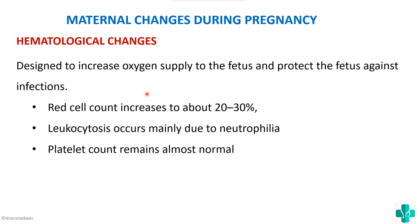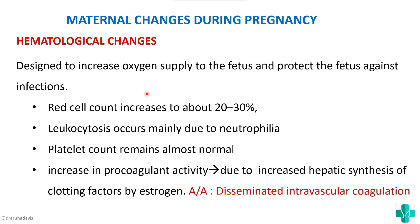There is an increase in pro-coagulant activity, meaning the blood can clot more easily. This is due to increased hepatic synthesis of clotting factors stimulated by estrogen. During pregnancy, high estrogen levels stimulate hepatic production of clotting factors, creating a pro-coagulant state. The clinical implication is that in complications of pregnancy, we can see disseminated intravascular coagulation (DIC) due to activation of these clotting factors.